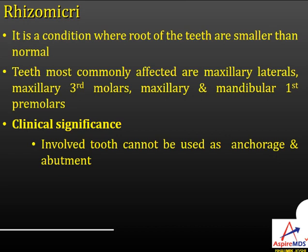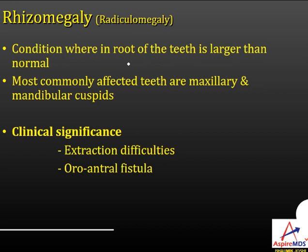Rhizomicria is a condition where roots of the teeth are smaller than normal. The teeth most commonly affected are maxillary lateral incisors, maxillary third molars, and maxillary and mandibular first premolars. Clinically, the involved tooth cannot be used as anchorage or abutment in orthodontics and prosthodontics. Rhizomegaly is the opposite — the roots are larger than normal. Most commonly affected are maxillary and mandibular cuspids, and they may be difficult to extract and can lead to oroantral fistula.